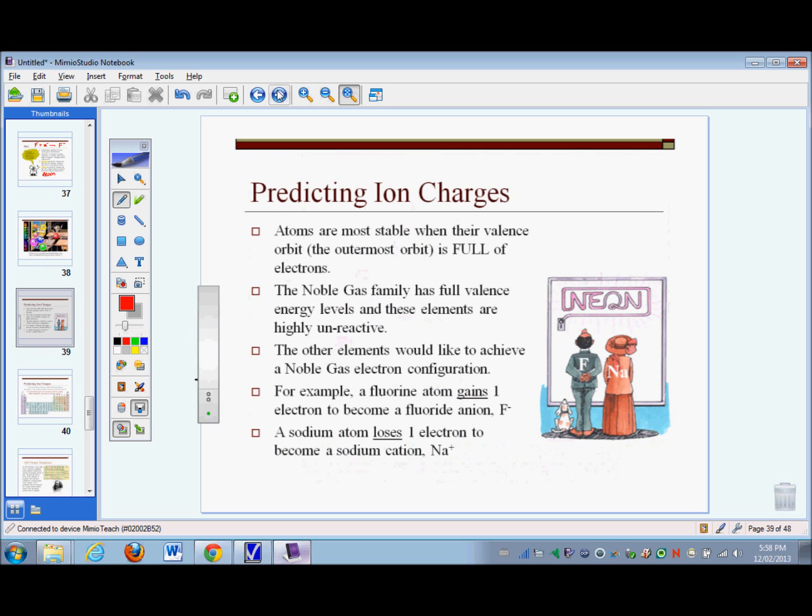If you have your data booklet open to the periodic table, that would be great. We're going to write some things on it. Looking at a periodic table, I can predict the charges that different elements will have when they become ions. The key in making these predictions is to realize that atoms are most stable when their valence orbits have eight electrons.